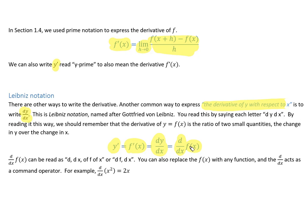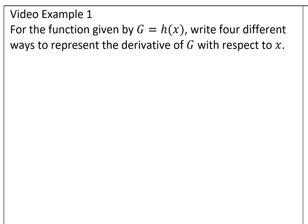Notice that if you put a function over here, this acts as a command operator, and that tells you to find the derivative of this function. The first example just talks about notation. We have a function g, which is defined as h of x. x is the variable inside the function, h is the name of the function, also named g. One thing we can do is always use the prime notation — that would be g prime or h prime of x.